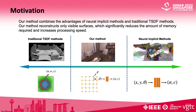Our method combines the advantages of neural implicit methods and traditional TSDF methods. Specifically, our scene is divided into appropriately sized voxel blocks, where each voxel contains feature embeddings that can be extracted by the neural network to represent SDF and colors. Our method reconstructs only visible surfaces, which significantly reduces the amount of memory required and increases processing speed.